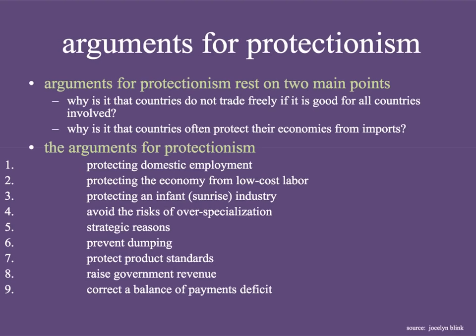Number one, protecting domestic employment. Two, protecting the economy from low-cost labor. Three, protecting an infant or sunrise industry. Four, avoiding the risks of over-specialization. Five, strategic reasons. Six, to prevent dumping. Seven, to protect product standards. Eight, to raise government revenue. And lastly, to correct a balance of payments deficit. Those are the nine reasons often given by countries for protectionism, as offered by Jocelyn Blink in her very well-done course companion. Let's take a look at them in more depth.